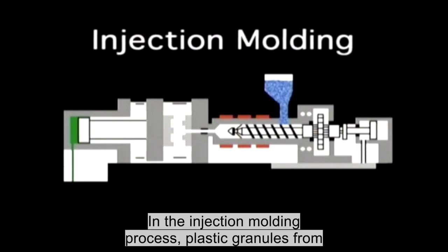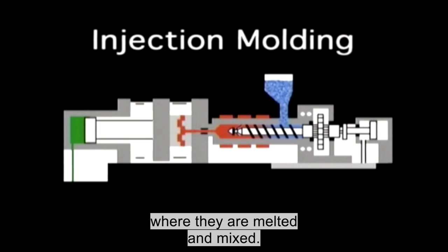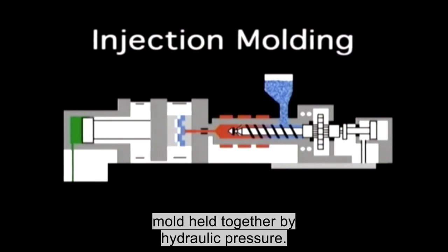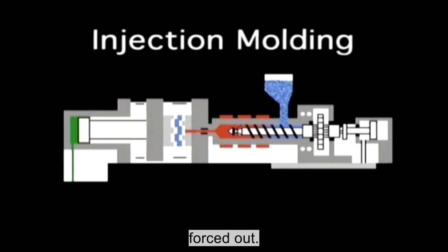In the injection molding process, plastic granules from a hopper are forced through a heated cylinder or barrel, where they are melted and mixed. Then a screw or plunger injects the material into a mold held together by hydraulic pressure. After the material cools, the mold opens and the part is forced out.